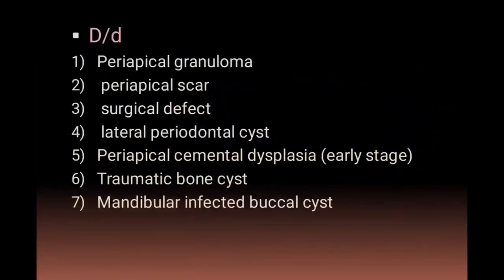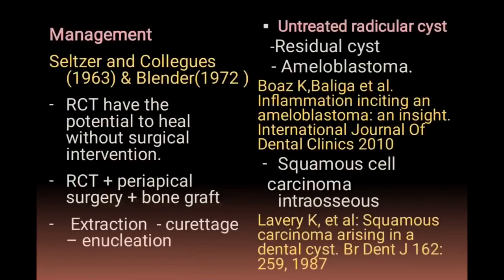Differential diagnosis includes periapical granuloma, scar or surgical defect, lateral periodontal cyst, periapical cemental dysplasia, traumatic bone cyst, or mandibular infected buccal cyst. Management: root canal treatment (RCT) has the potential to allow healing without surgical intervention; sometimes RCT plus periodontal surgery and bone graft is required; other options include extraction, curettage, and enucleation. Untreated radicular cyst may give rise to ameloblastoma or squamous cell carcinoma.